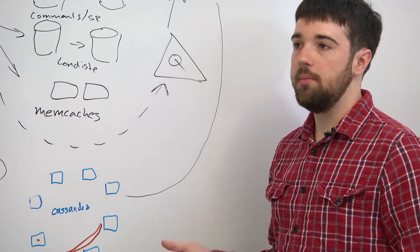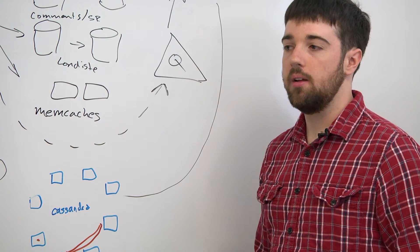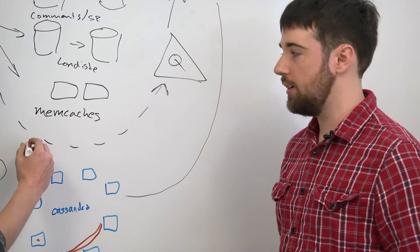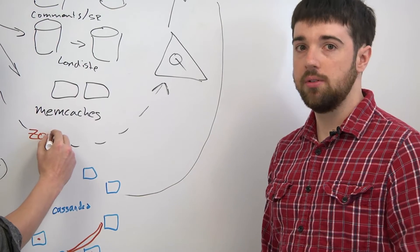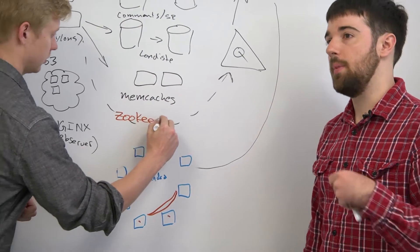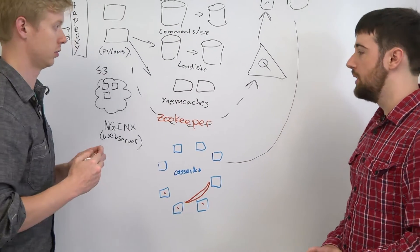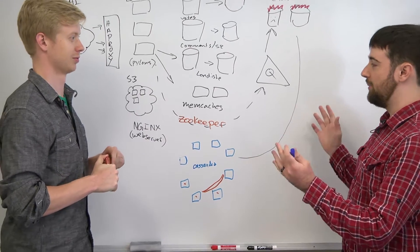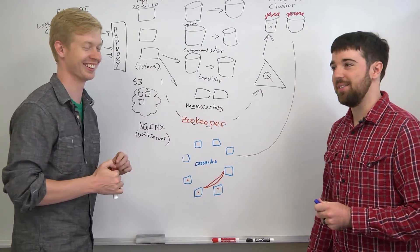And the main advantage of Zookeeper is that it has much higher availability. So if we lose the Zookeeper node, we should be able to come back within 200 milliseconds, as opposed to whenever somebody notices the cache is down and replaces it.